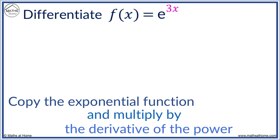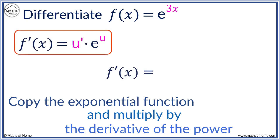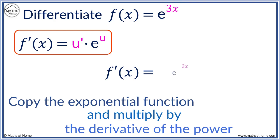Differentiate e to the 3x. We copy the exponential function of e to the 3x. Now, we multiply by the derivative of the power. The derivative of 3x is 3.